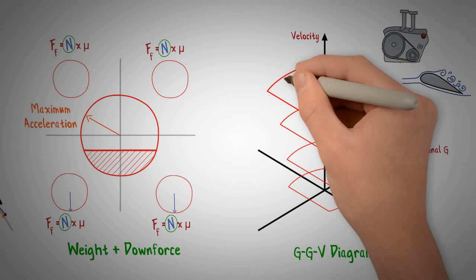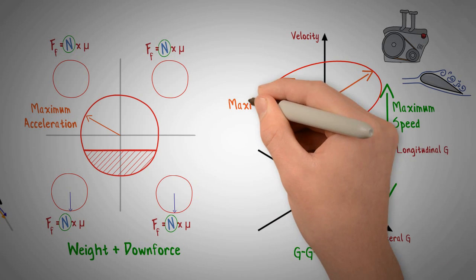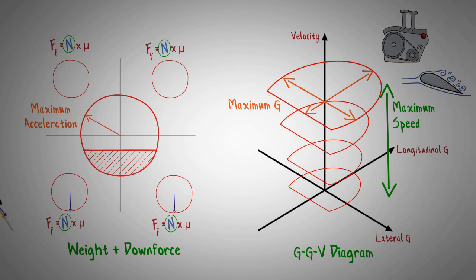On the other hand, the width of the diagram represents how aggressively the car can brake and corner, and as we know, both faster cornering and more aggressive braking result in faster lap times.